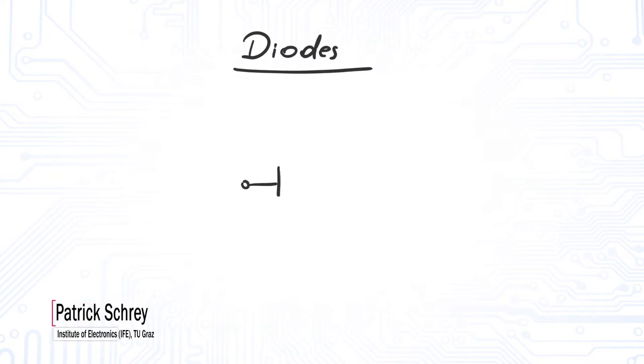Diodes are the most basic semiconductors. They have the peculiar ability to conduct current in one direction only.